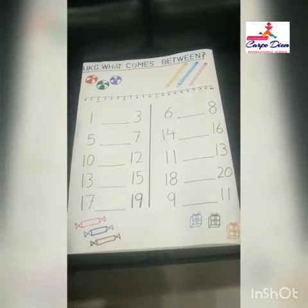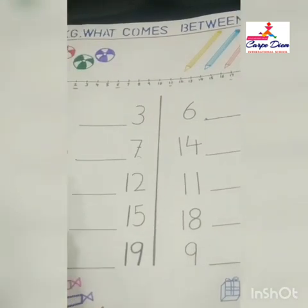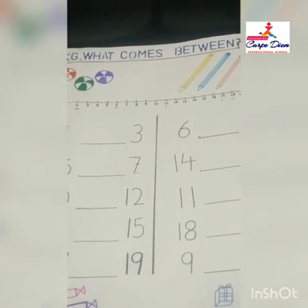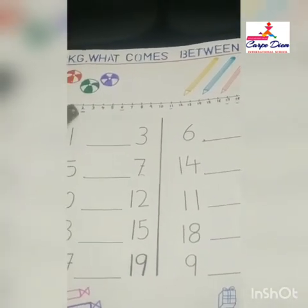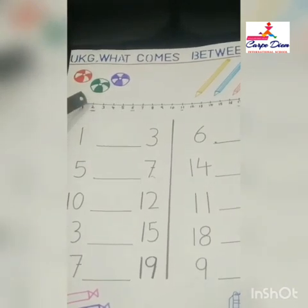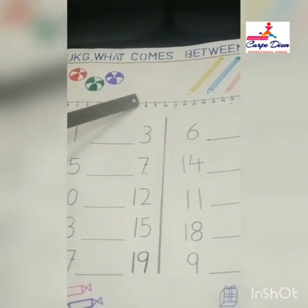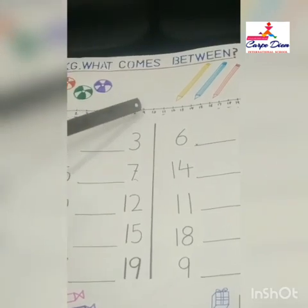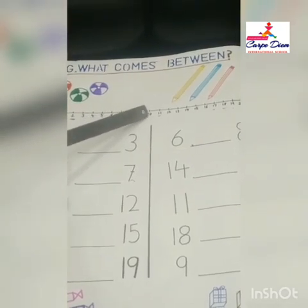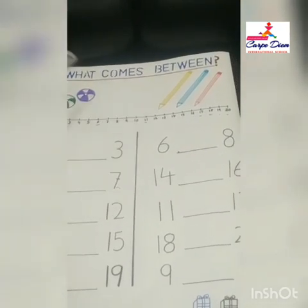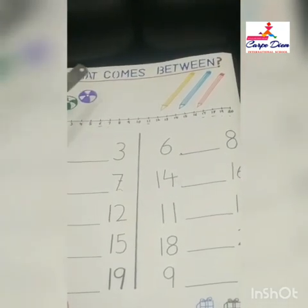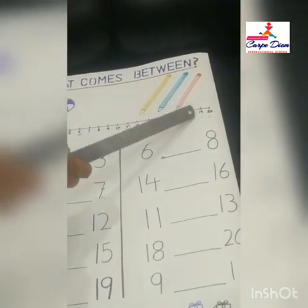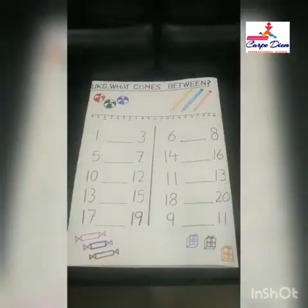Now look here. Which number is between 1 and 3? 2. Which number is between 5 and 7? 6. Which number is between 10 and 12? 11. Which number is between 17 and 19? 18.